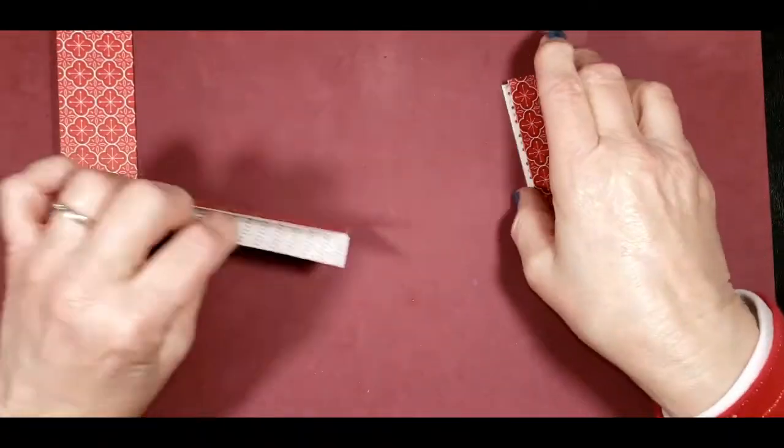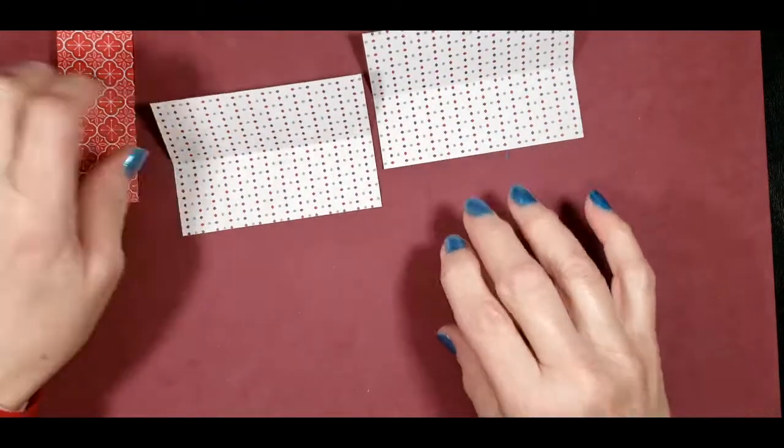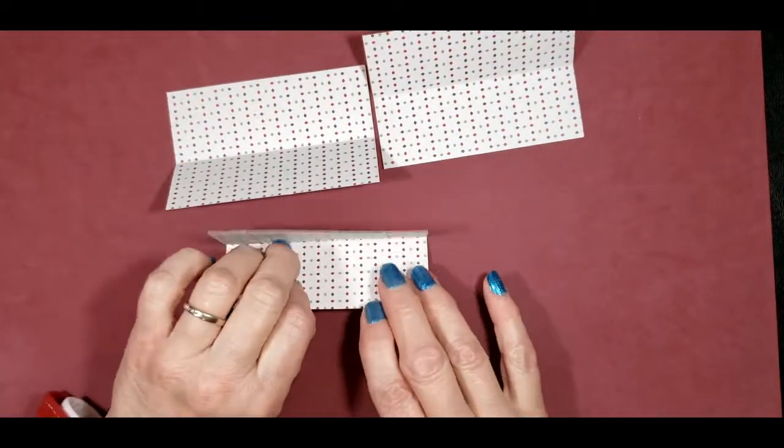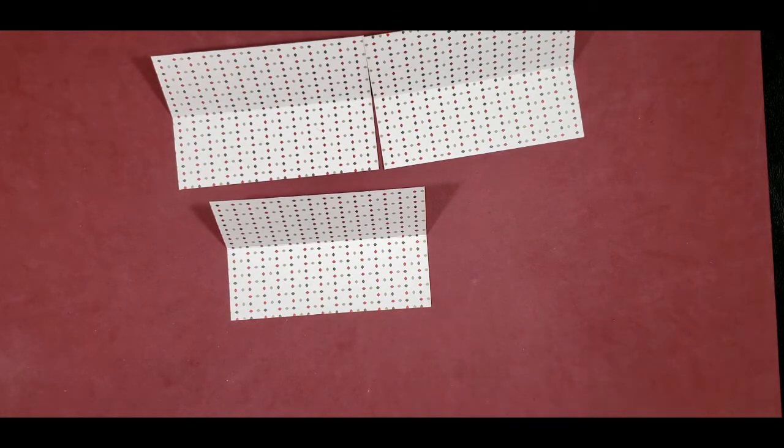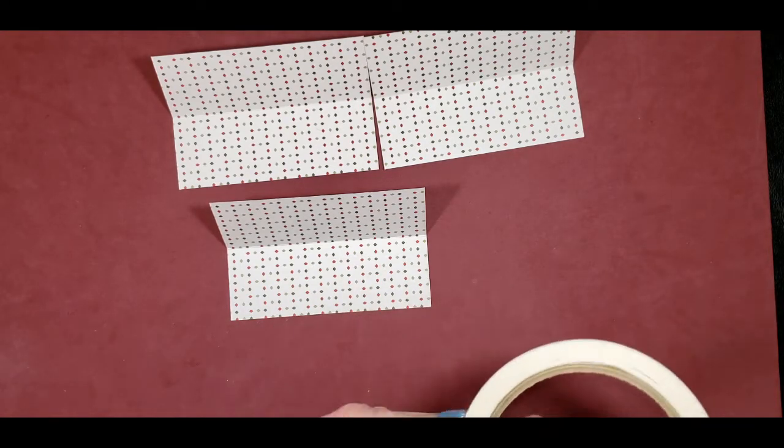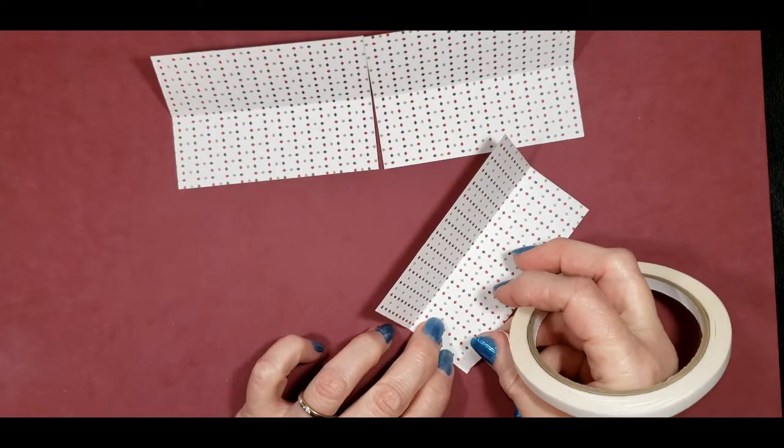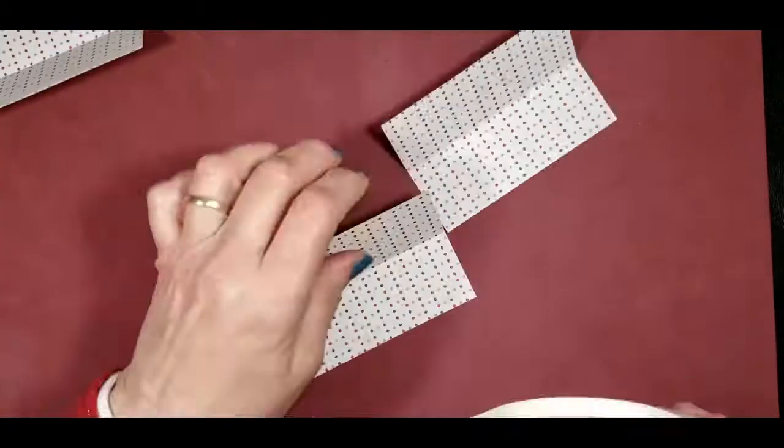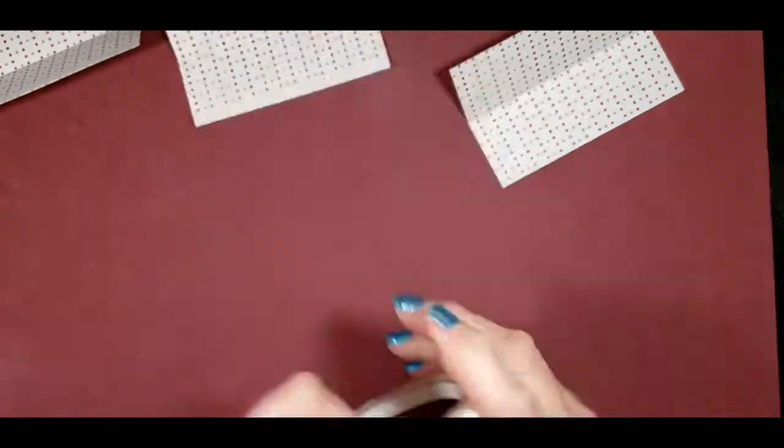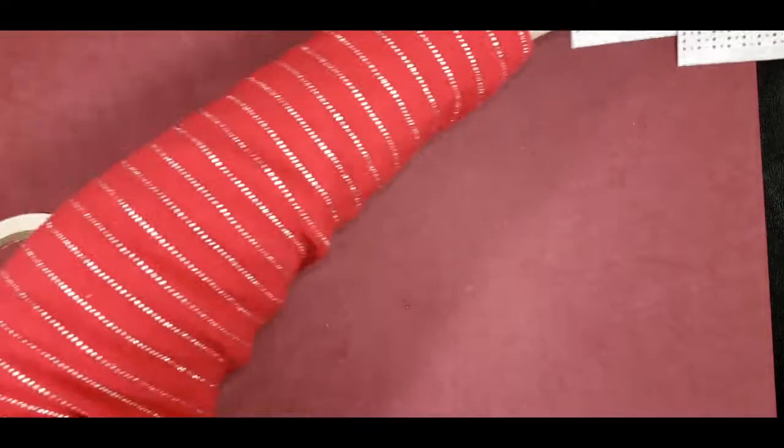Next we want to put a piece of tape on the bottom edge, this long bottom edge. We're going to just use tear and tape because we want it to have a strong hold. So those are ready. We'll just set those aside.